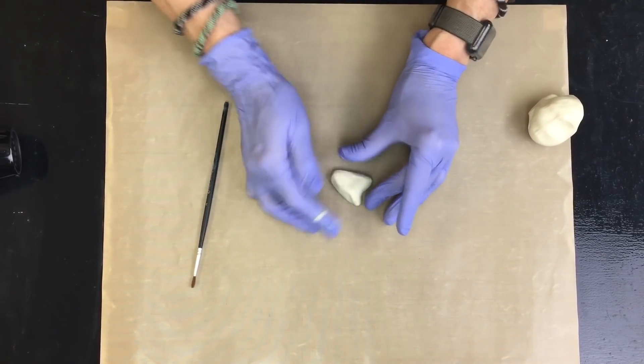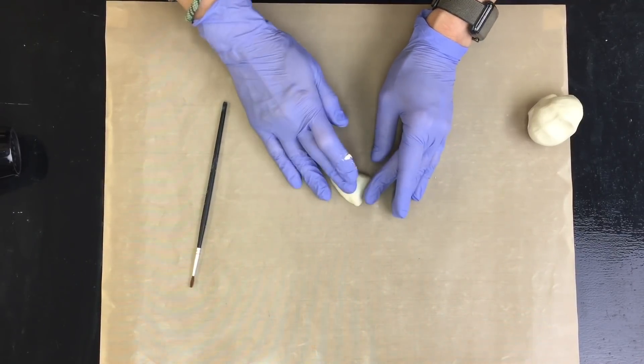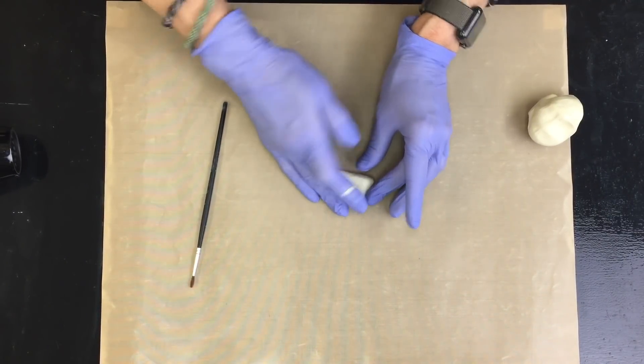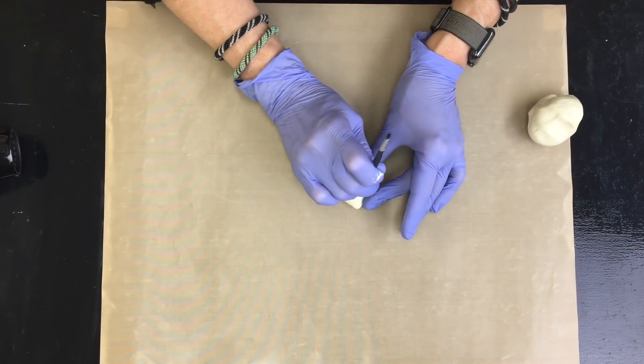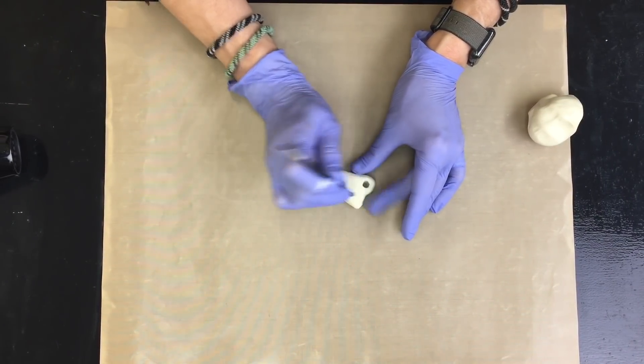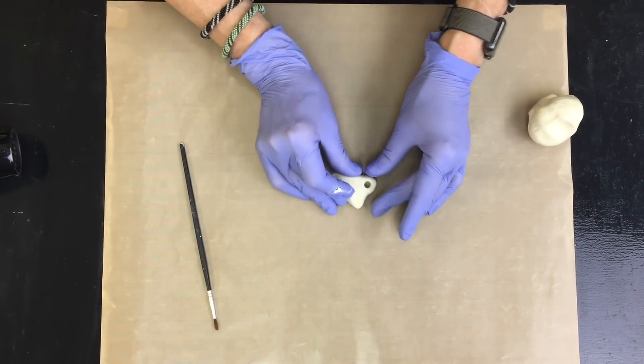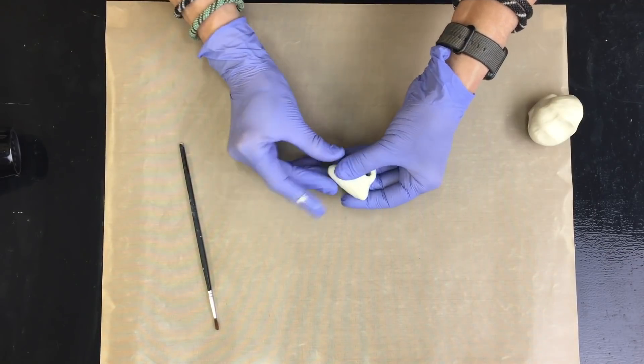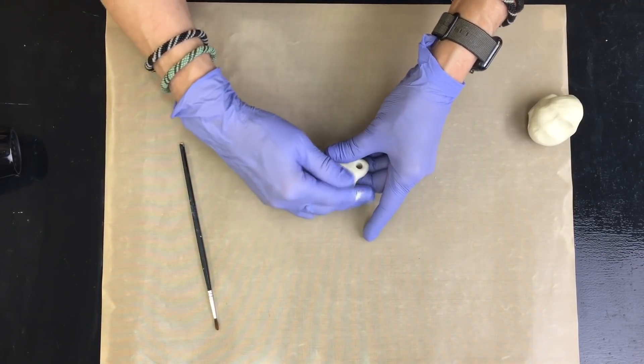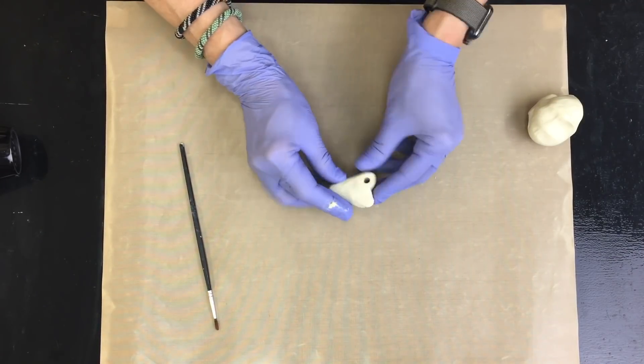QuickCure Clay is, as you see, very pliable right out of the bag. You can use a stamp or you can use any kind of household item to make different markings or texture in the clay itself.